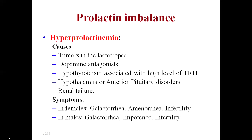Hyperprolactinemia is the increased level of prolactin in serum and is always associated with infertility. Causes include tumors in the lactotrophs, dopamine antagonists, hypothyroidism — which is associated with high levels of thyrotropin-releasing hormone — hypothalamic or anterior pituitary disorders, and renal failure. Symptoms in females include galactorrhea, amenorrhea, and infertility; in males, galactorrhea, impotence, and infertility.